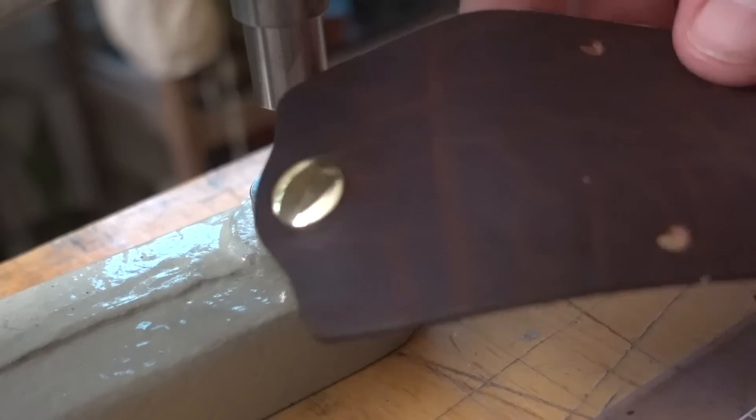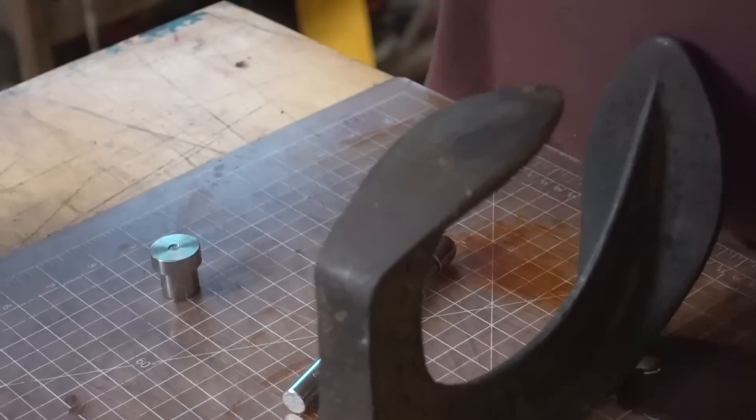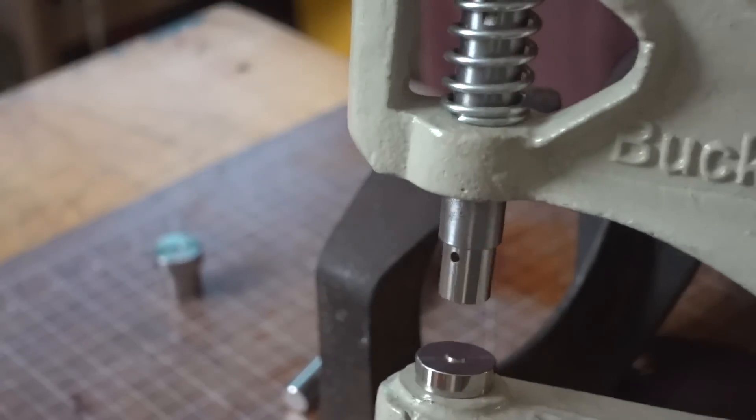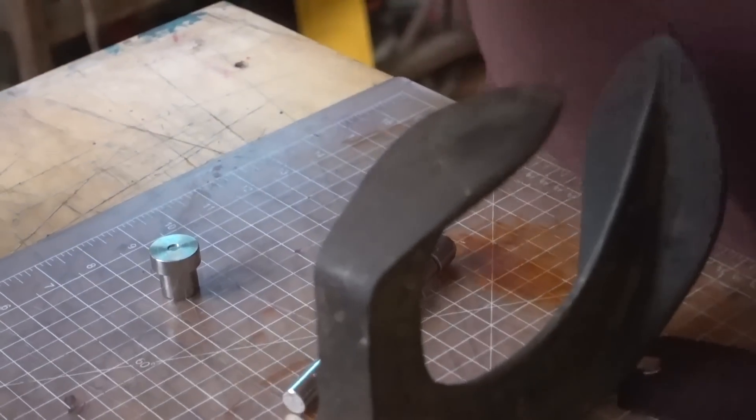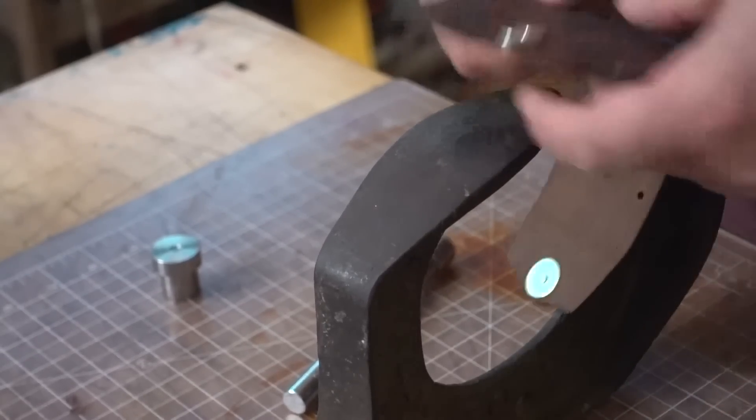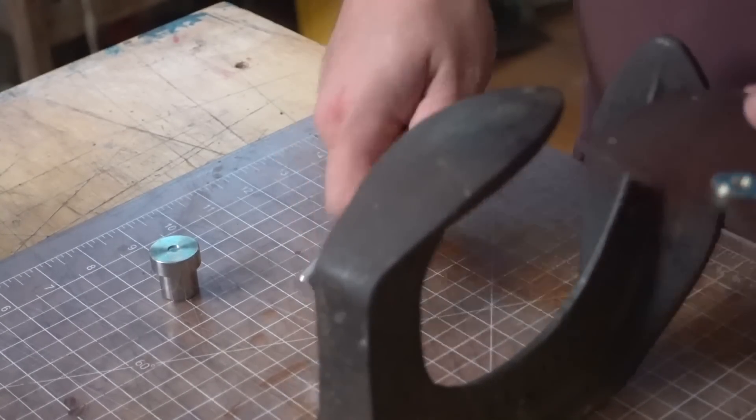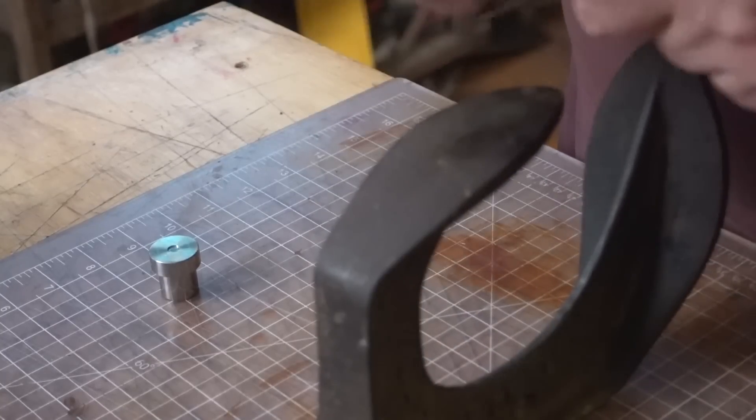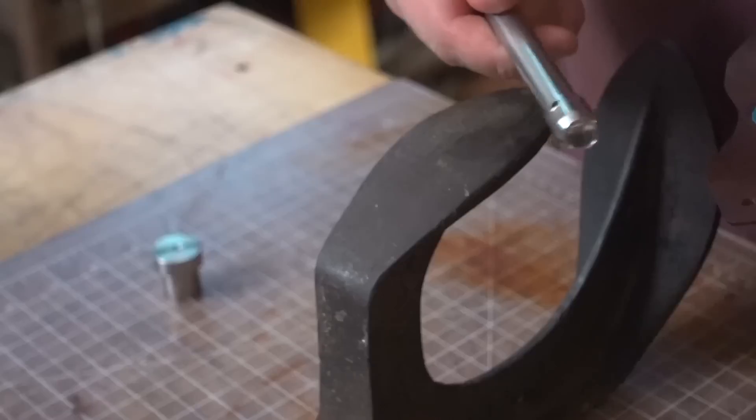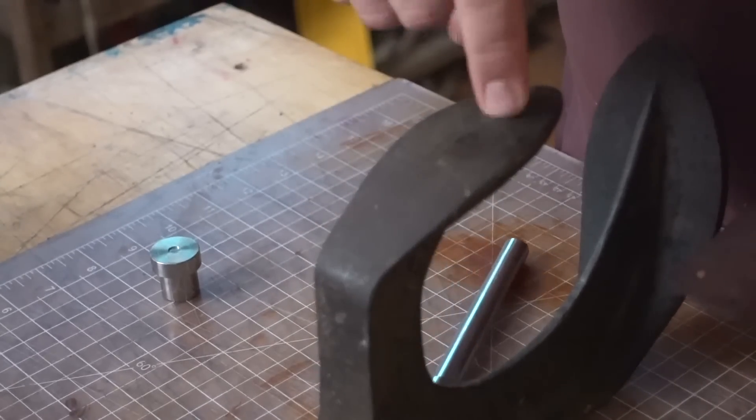So for setting the rivets, I'm not going to use the press. I'm actually going to use a cobbler's anvil, and the reason for that is because we got to stick this thing way in to set these bottom rivets. So I'm actually going to only use the top section of the rivet setter, the manual hand setter, and the bottom section is going to be this.